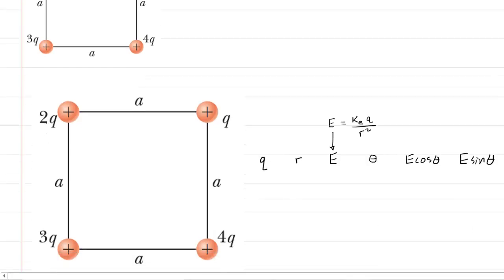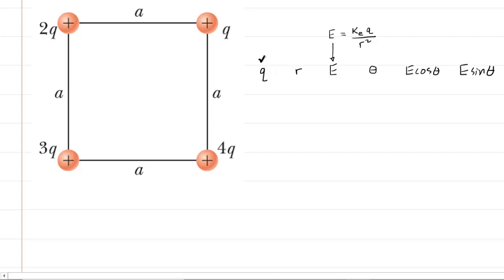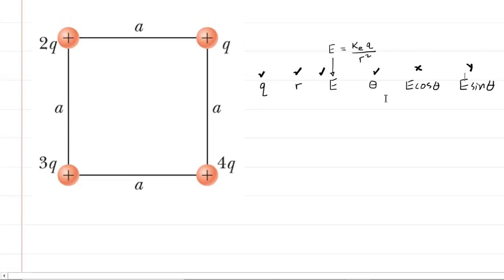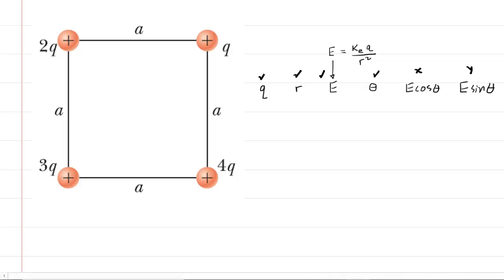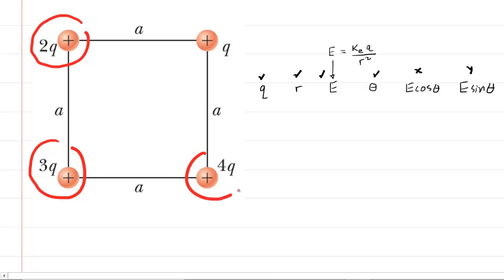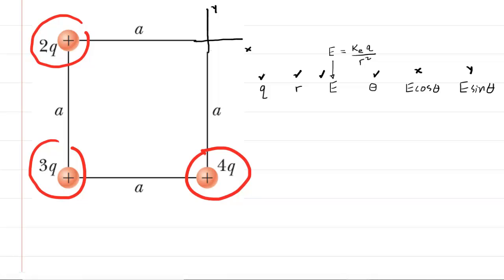We'll also set up a chart containing several variables: charge, distance, electric field, and angle, and then the X component and the Y component of the electric field. We're going to be filling in all columns of that chart. It is helpful to understand that the other charges at the other corners of the square will be contributing to the electric field at this location. Any charge actually present at that location will not contribute, so we can remove the charge labeled Q and leave behind a Y and X axis.